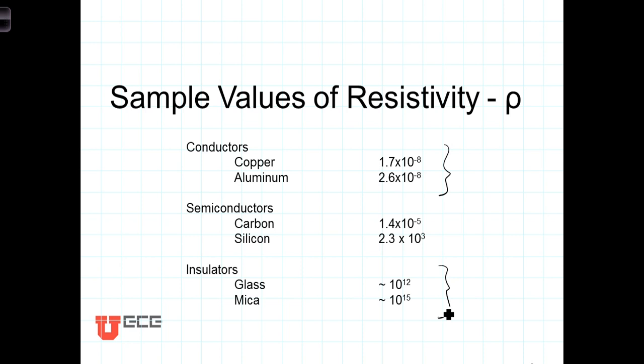And then insulators, on the other hand, have resistivities on the order of 10 to the plus 12. So 10, what is that? 10 to the 20th times greater resistivity in an insulator than in a conductor.